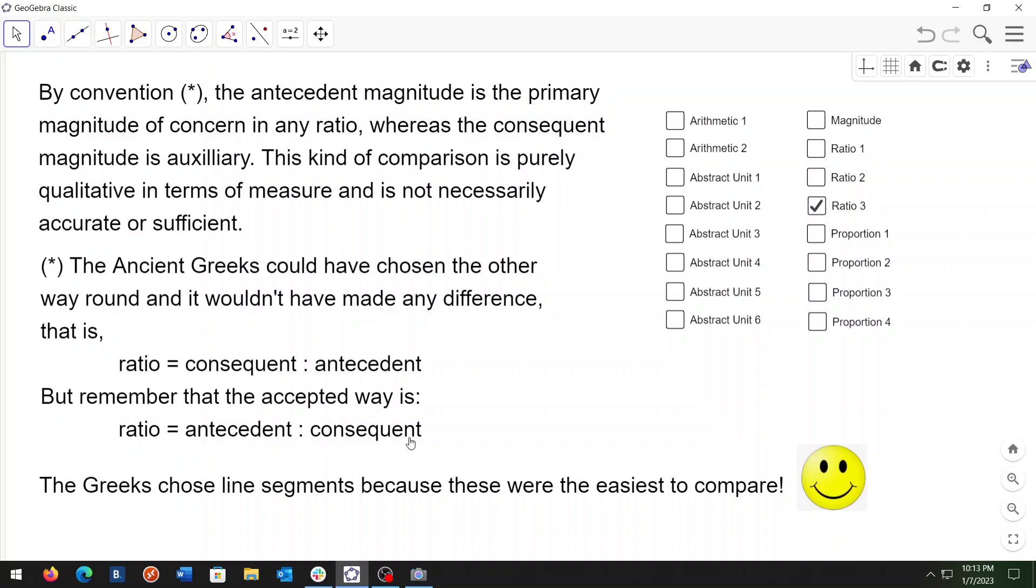The Greeks chose line segments because these were the easiest to compare. Next, I'll cover the concept of proportion.